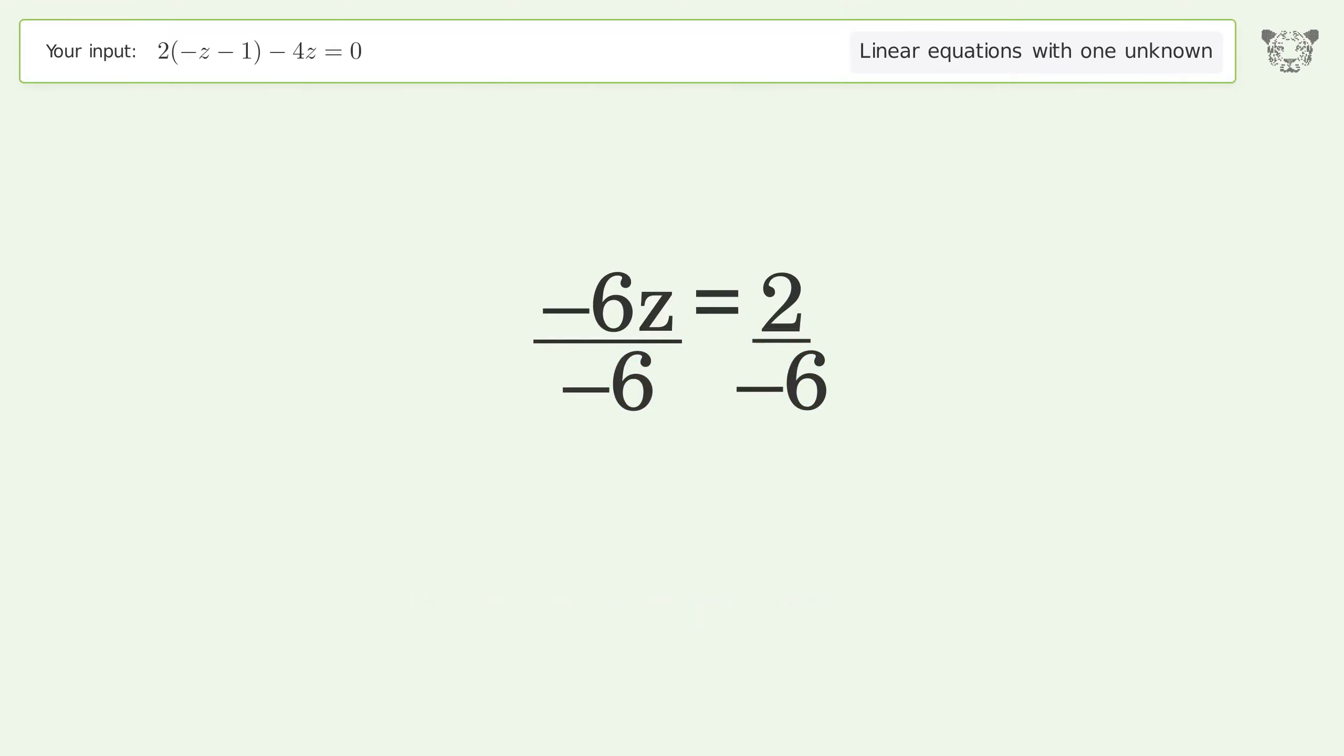Isolate the z. Divide both sides by negative 6 and cancel out the negatives.